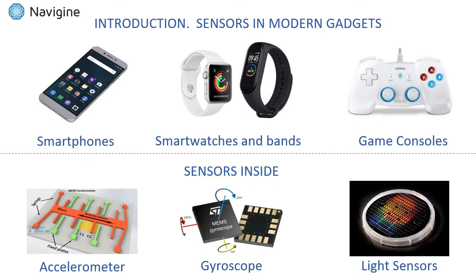Nowadays, modern gadgets like smartphones, smartwatches, iPads, and game consoles are equipped with many different microsensors like accelerometers, gyroscopes, magnetometers, light sensors, and others.